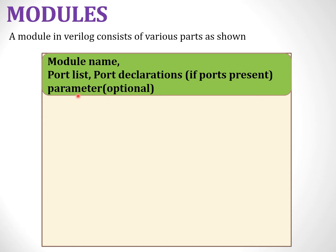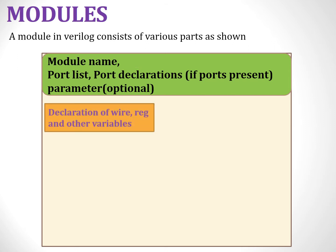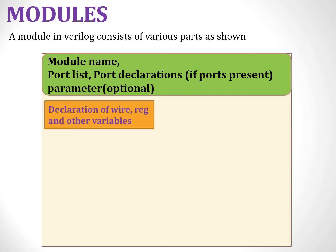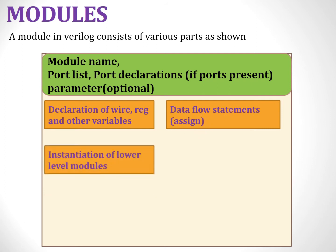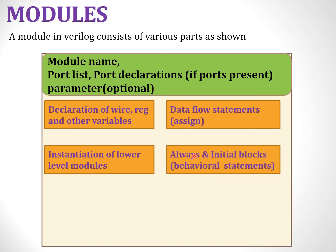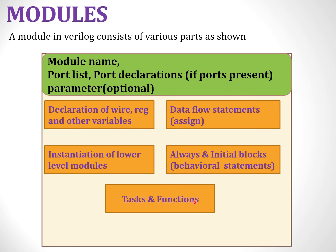Except the parameter declaration, every module we declare should have a module name, port list, and port declarations. Once these three declarations are done, it is important to declare wires, registers, or any other variables needed in the program. Along with this, we can have data flow statements using the keyword assign. We can instantiate lower level modules, and we can have always and initial blocks representing behavioral description, or tasks and functions defined inside a module as well.